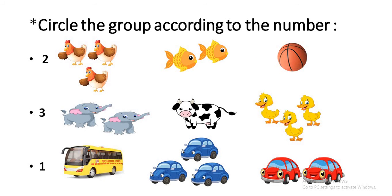A question: Look at the group according to the number. It said number 2, so I count 1, 2, 3 - 1, 2. So I circle this group. It said number 3: 1, 2, 1 - 1, 2, 3. So I circle this group.